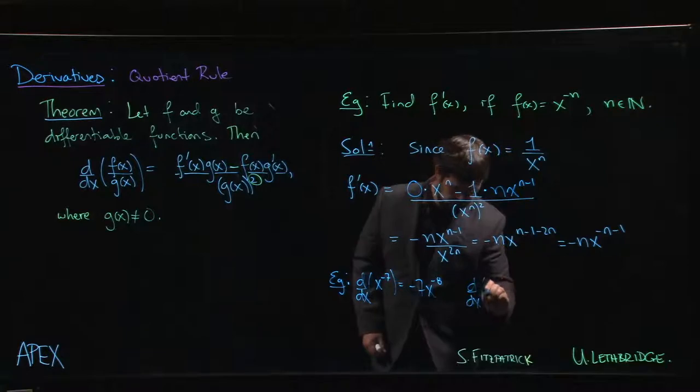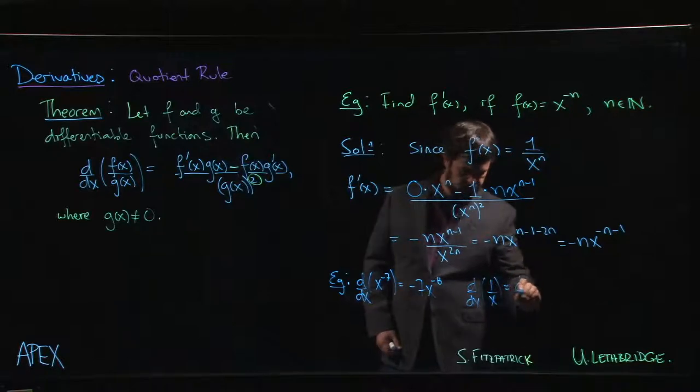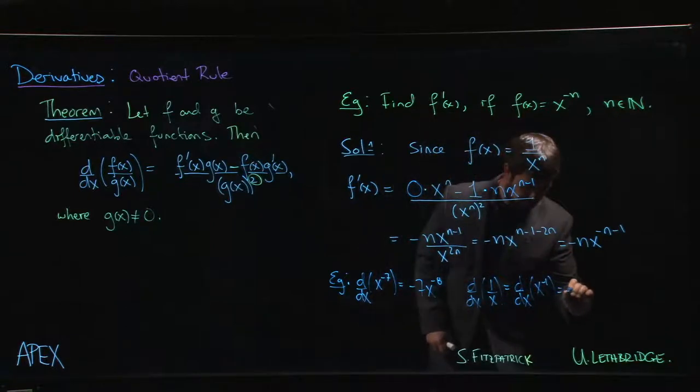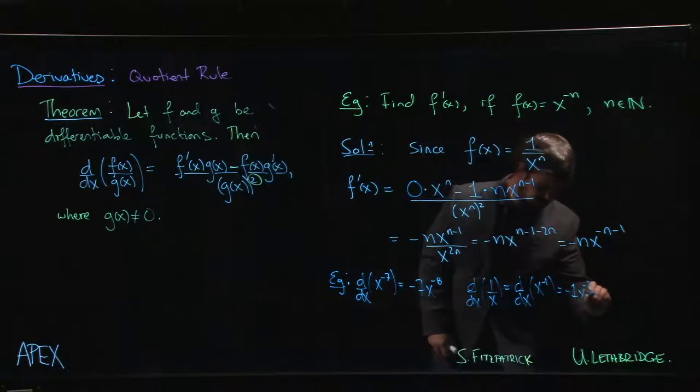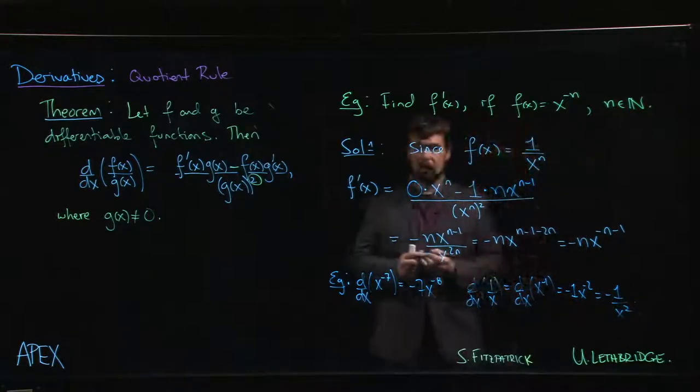Or if I wanted to do the derivative of 1 over x, which is x to the minus 1, the power rule says that's minus 1 times x to the minus 2, which we might choose to write as minus 1 over x squared.